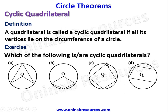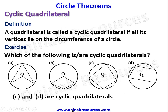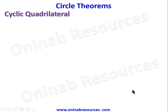For C, all four vertices lie on the circumference of the circle, so this is a cyclic quadrilateral. For D as well, all four vertices — one, two, three, four — lie on the circumference of the circle. So we conclude that C and D are cyclic quadrilaterals.